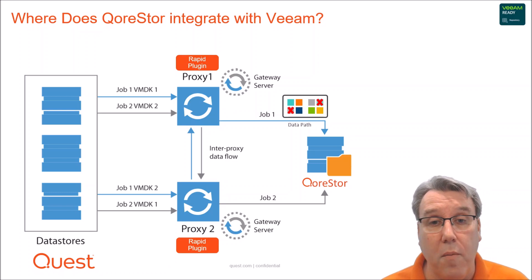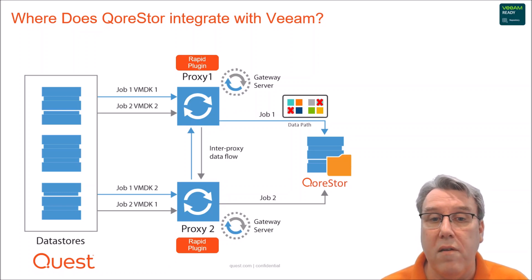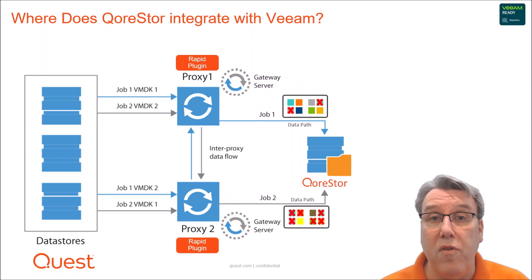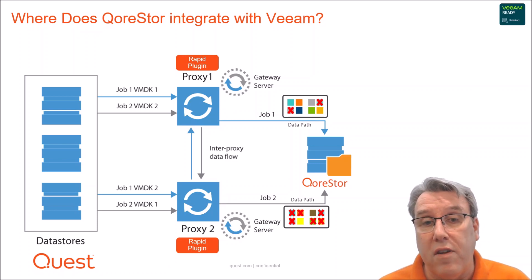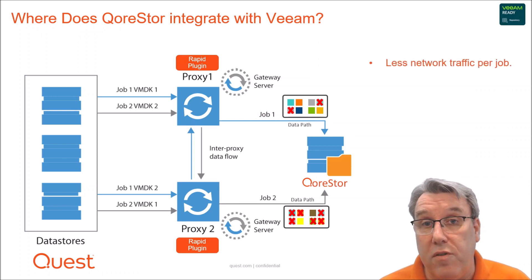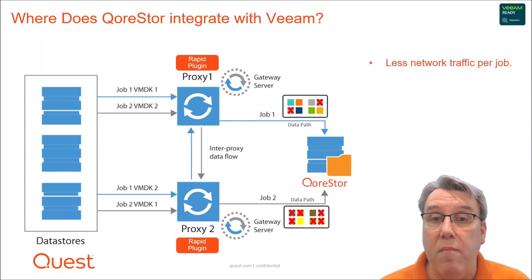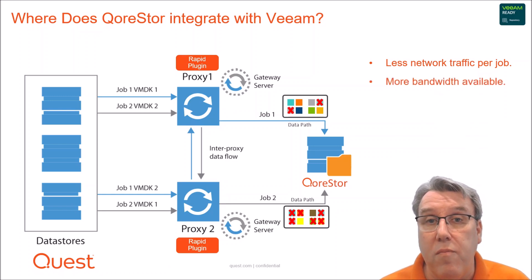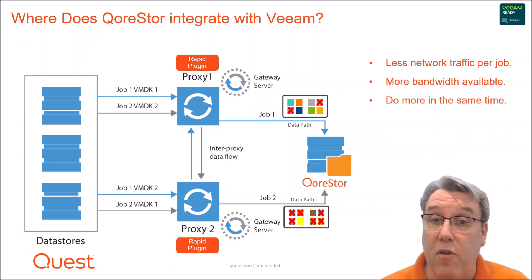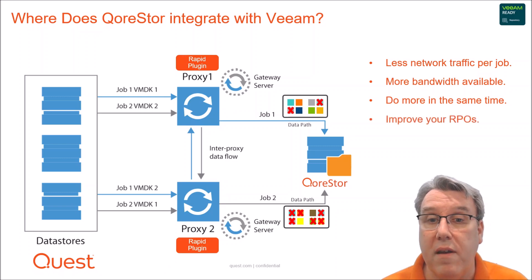The next time we run another job — and it doesn't have to be the same one, it could be any job — all of the data you already have stored is compared with any new incoming data. If the blocks look the same, we'll just remove those, so they don't have to travel across the network at all. This obviously reduces the amount of network traffic we have, but more importantly it provides you with more bandwidth available at the target storage, which in turn allows you to do more in the same amount of time. And if you want to do more, you also have the ability to improve your recovery point objectives by getting more done.